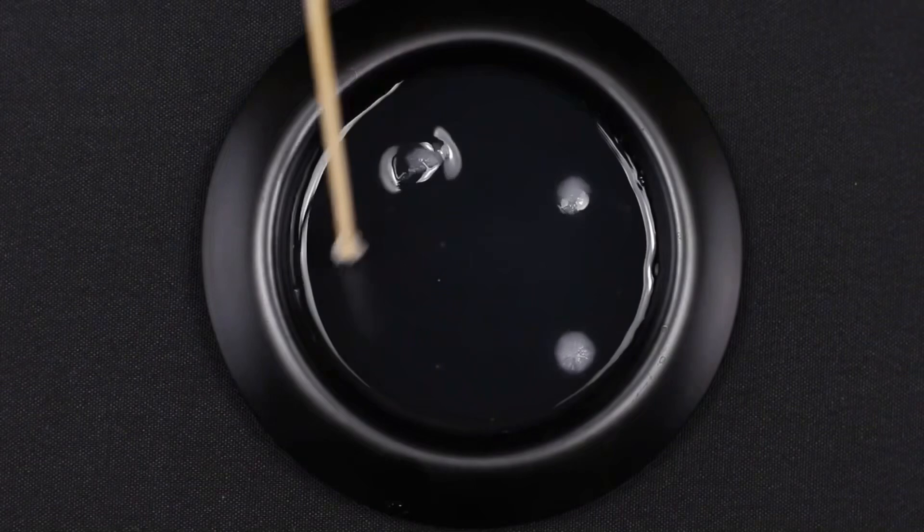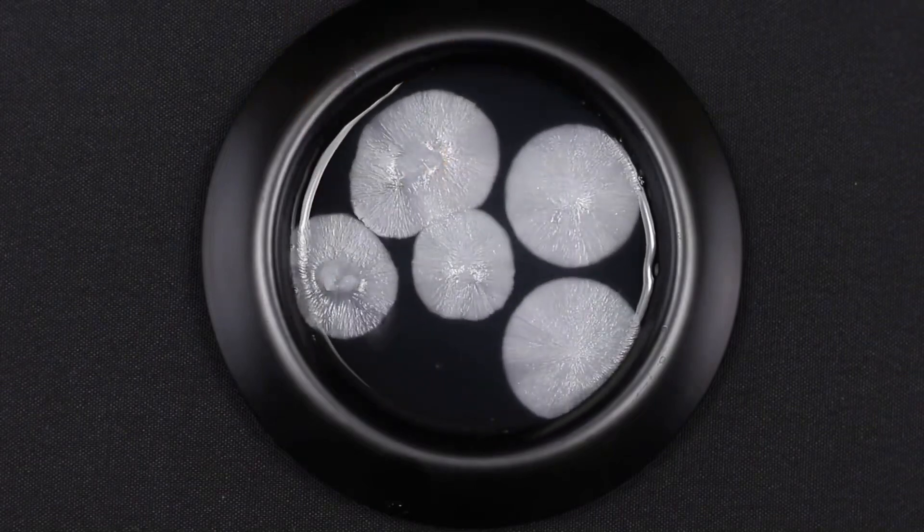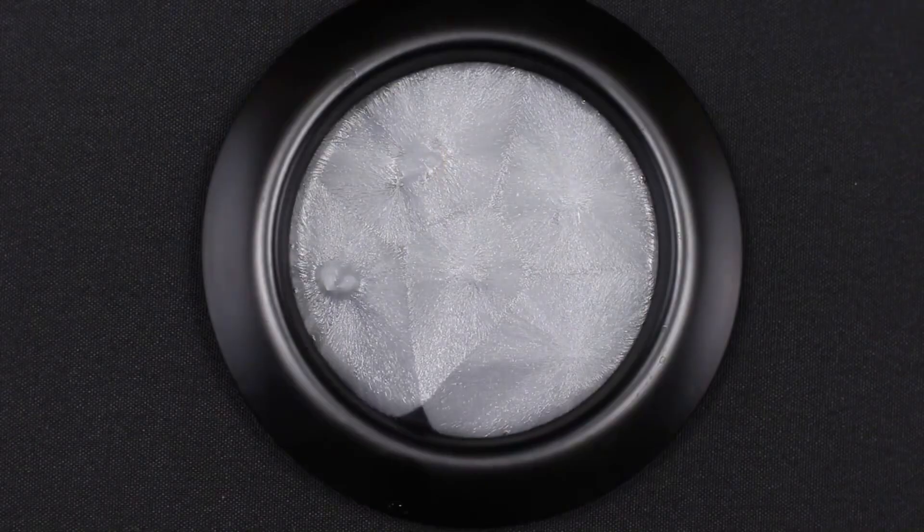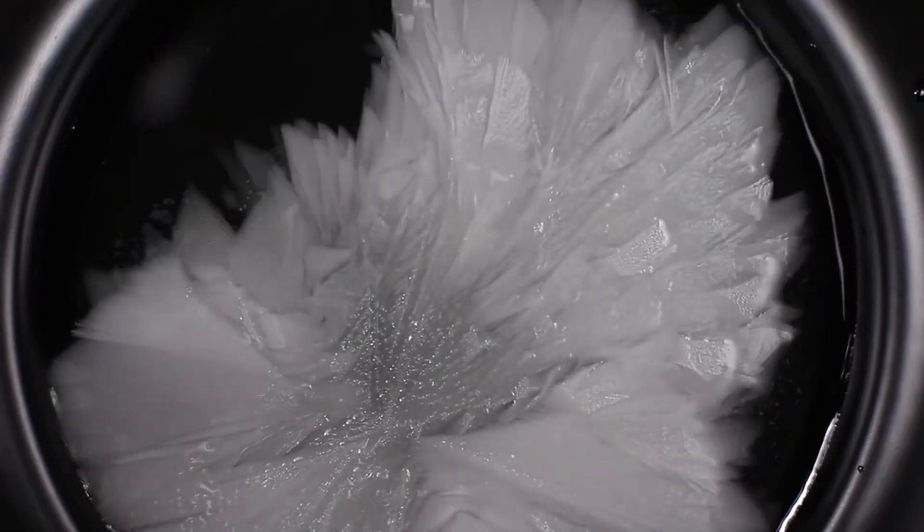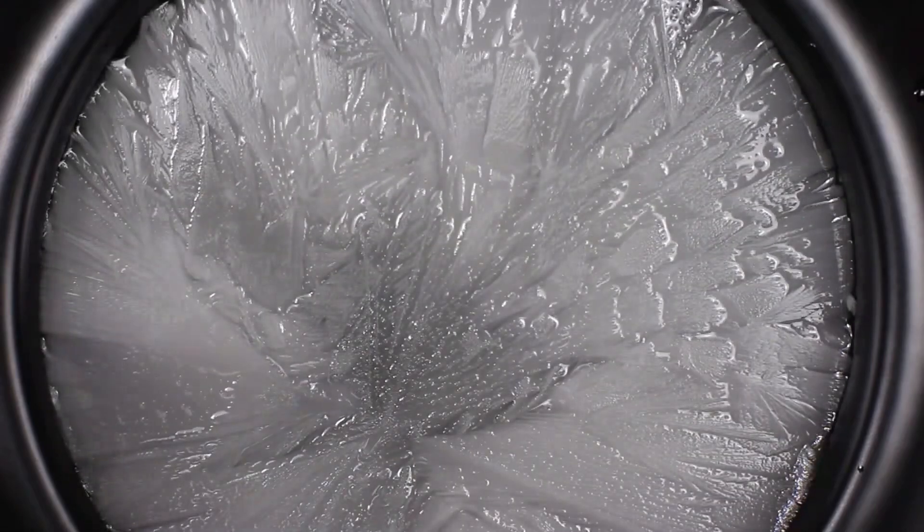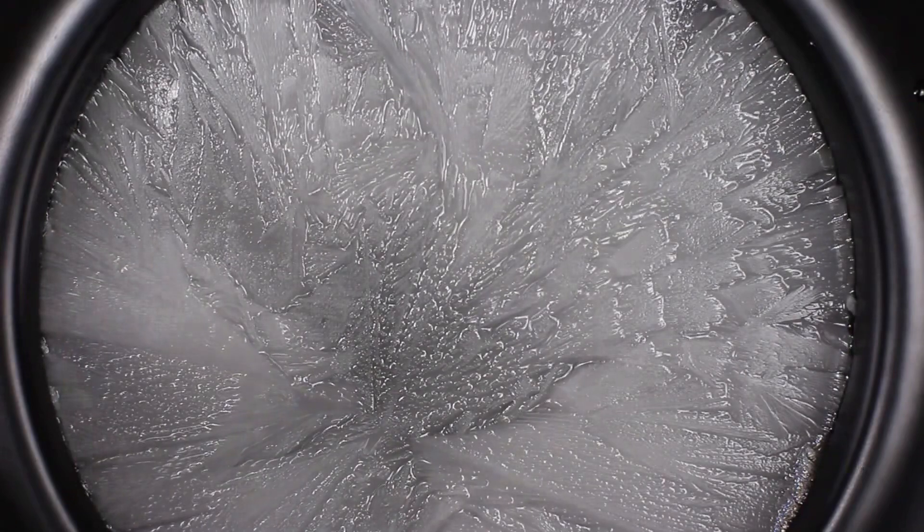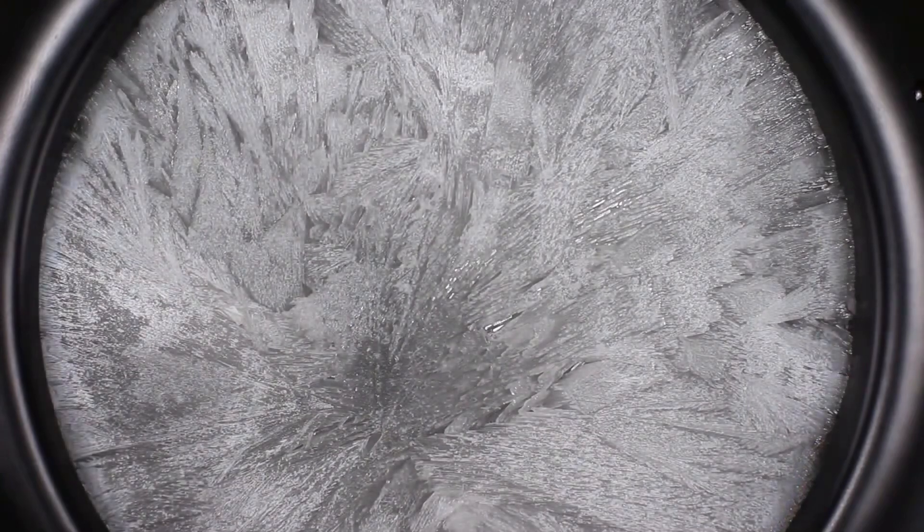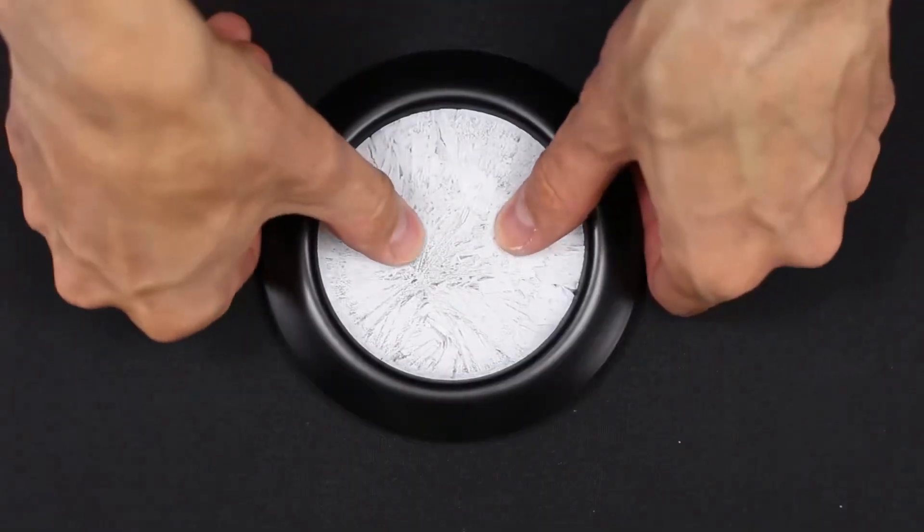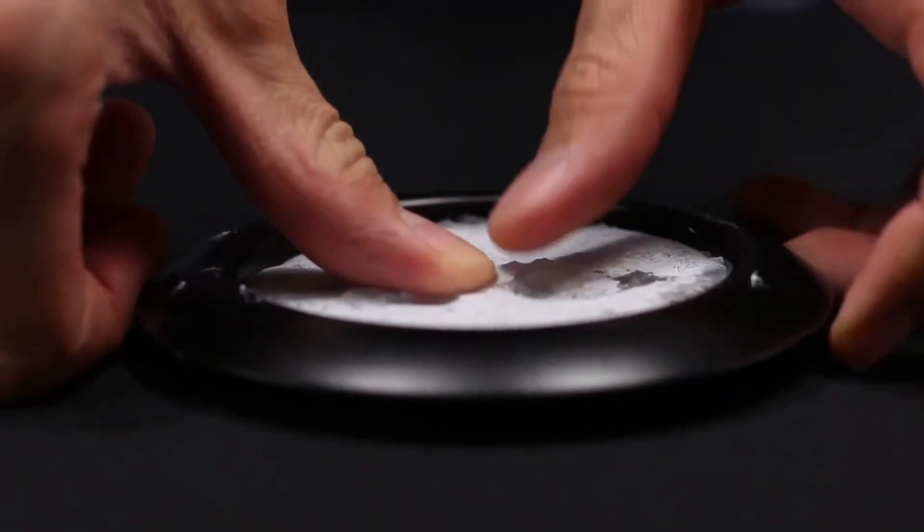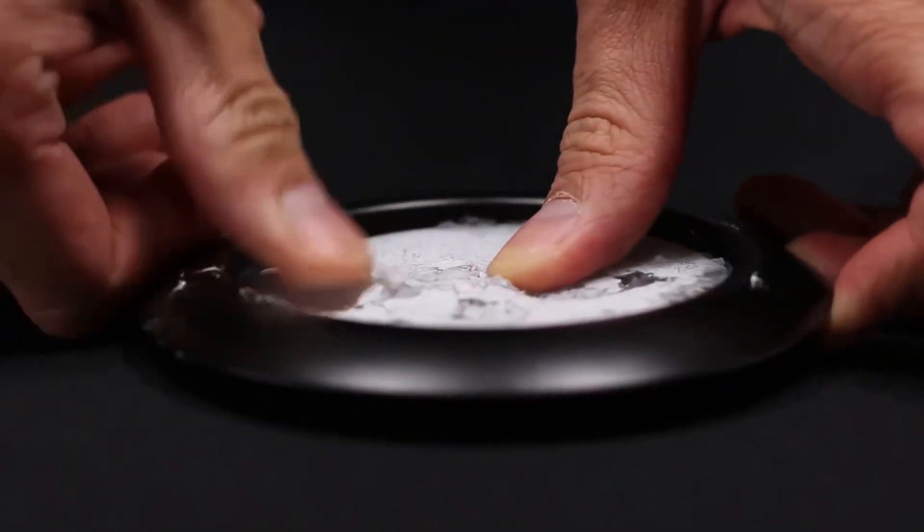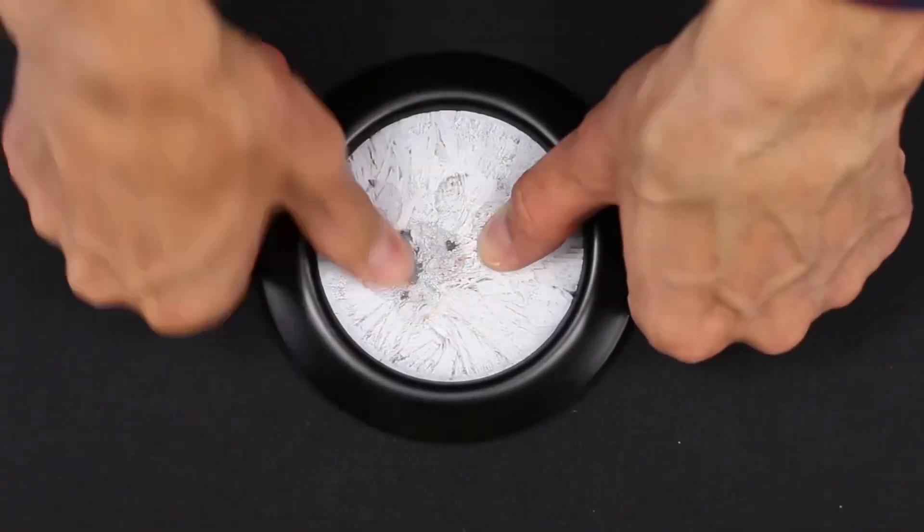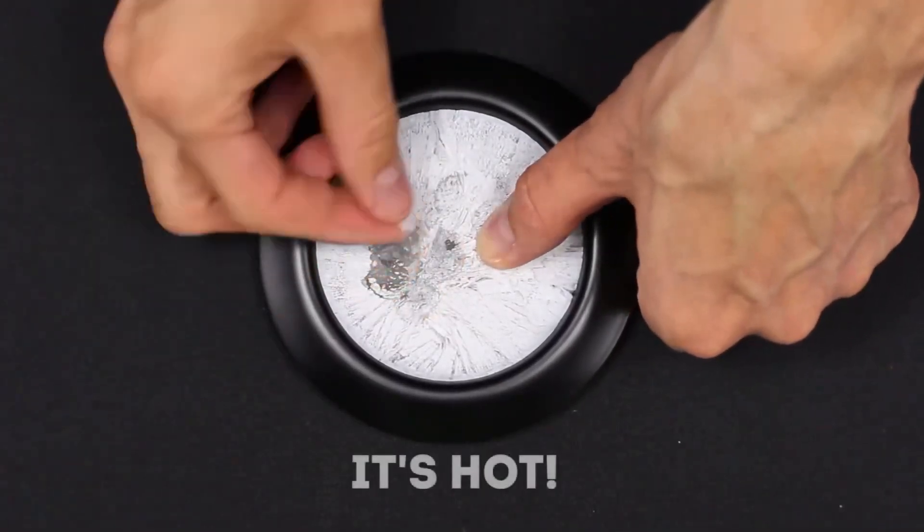Just look how beautiful it looks. Let's try to crumble our crystals. They look like ice. But they are hot. If we smoothly pour out our liquid, then it will begin to form in such a column. The freezing is just instant.